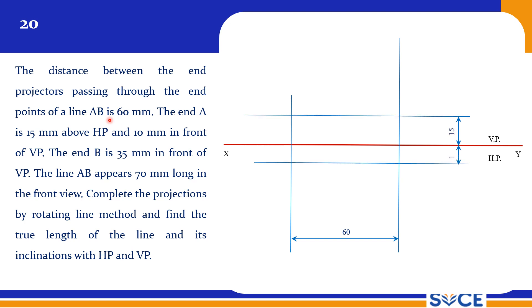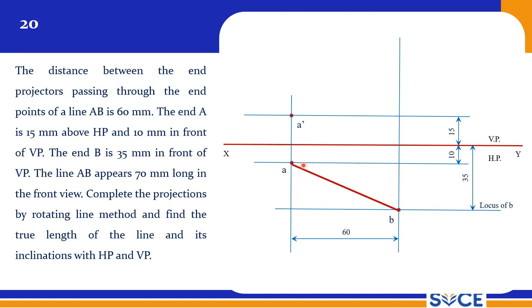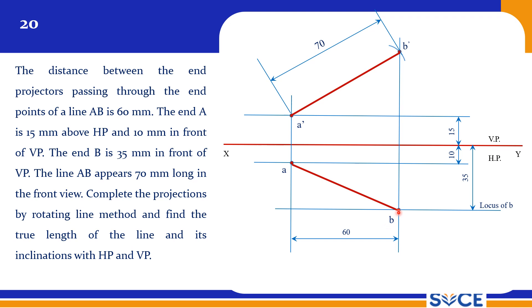The distance between end projectors is 60 mm. The first point is 15 mm above HP and 10 mm in front of VP, so I get A' and A straight away. End B is 35 mm in front of VP, so I get the locus of B, and the final top view is obtained directly. The front view is 70 mm long, so A'B' is 70 mm. With this, I have obtained the final front view and final top view.